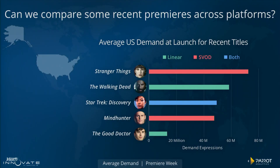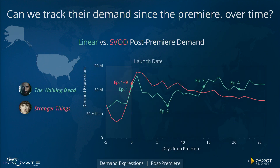Let's compare the premieres for five popular TV shows across different platforms: Stranger Things, The Walking Dead, Star Trek Discovery, Mindhunter, and The Good Doctor. Five shows with recent popular season premieres across different platforms — linear, including cable, SVOD, and in the case of Star Trek, both. This is the average demand of the first seven days post season premieres.